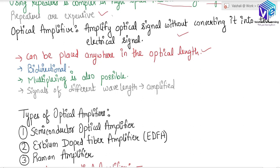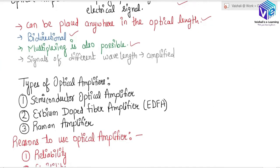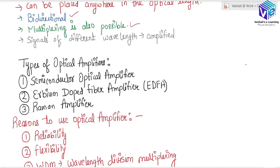The next characteristic is that optical amplifiers are bi-directional, which means they can amplify the light signal traveling in both directions. And even multiplexing is also possible — this is again a very good characteristic. We can also amplify signals of different wavelengths (lambda); different wavelength signals can also be amplified very easily.